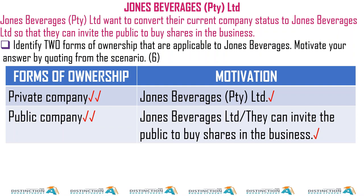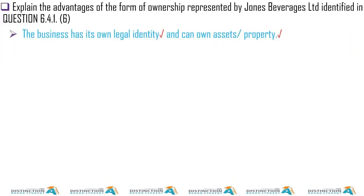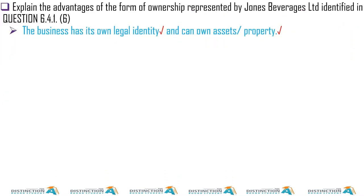Jones Beverages PTY LTD — that is a private company — wants to convert to Jones Beverages Limited, so they want to go public so they can invite the public to buy shares in the business. Identify two forms of ownership applicable to Jones Beverages: a private company and a public company. The motivation is the names — PTY LTD for private and Limited for public.